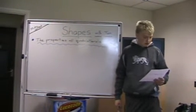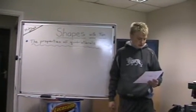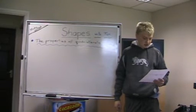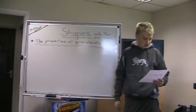A rhombus has got four sides of equal length, and opposite sides are parallel and angles are equal.